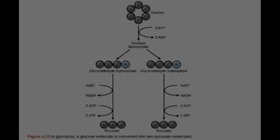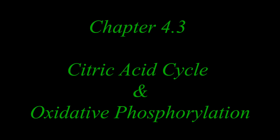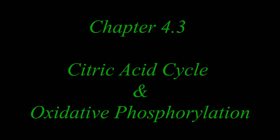Figure 4.13: In glycolysis, a glucose molecule is converted into two pyruvate molecules. This ends Chapter 4, Section 4.2, Glycolysis. In the next video, we'll read Section 4.3, Citric acid cycle and oxidative phosphorylation.